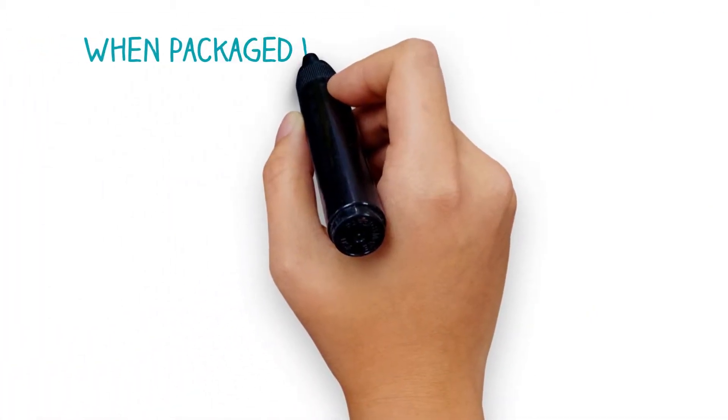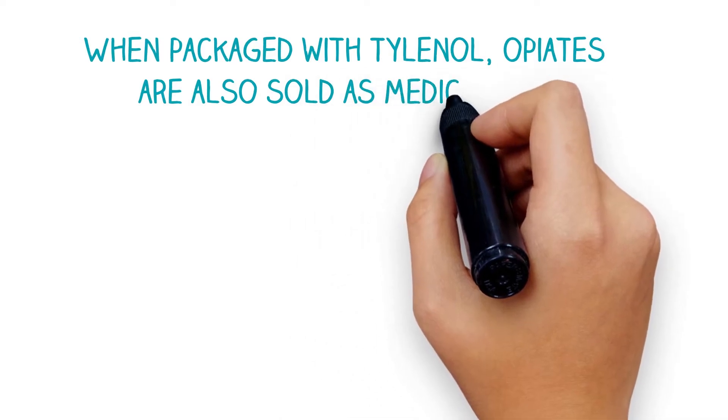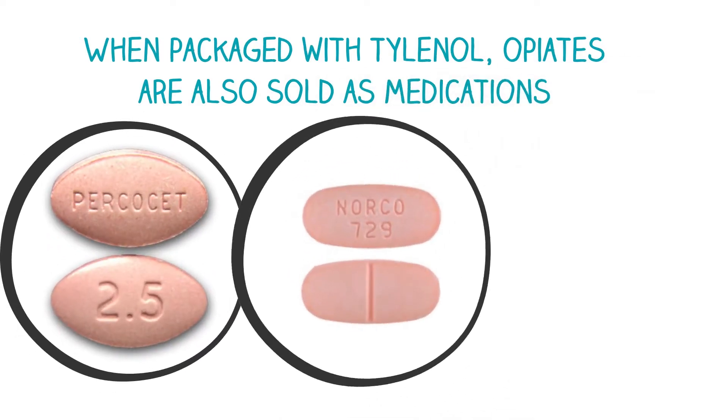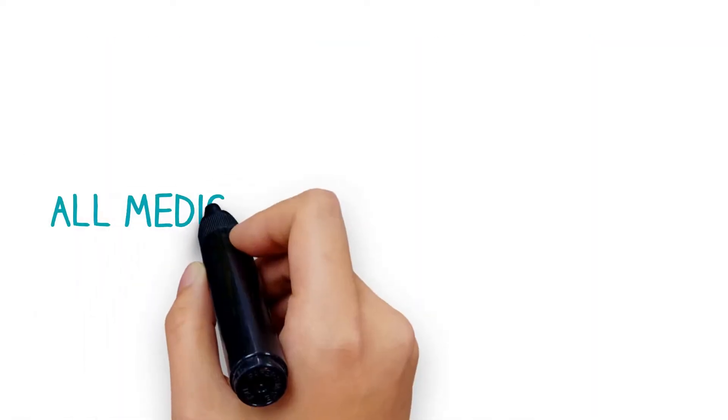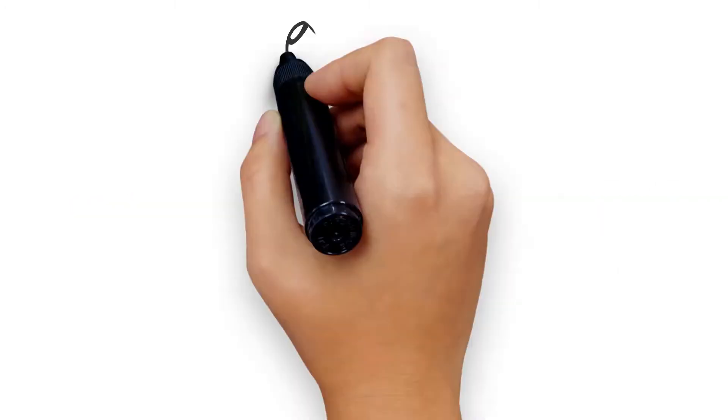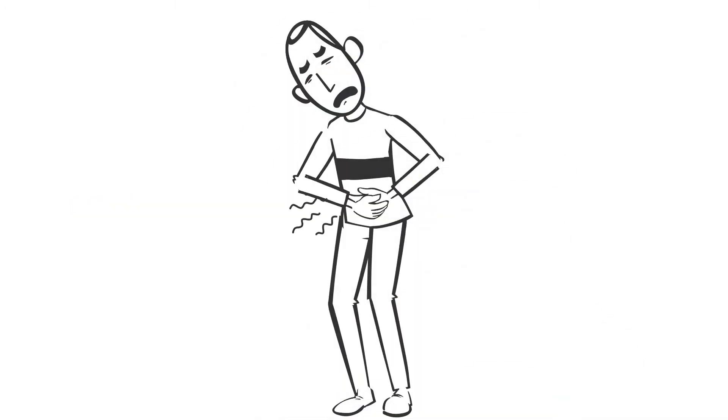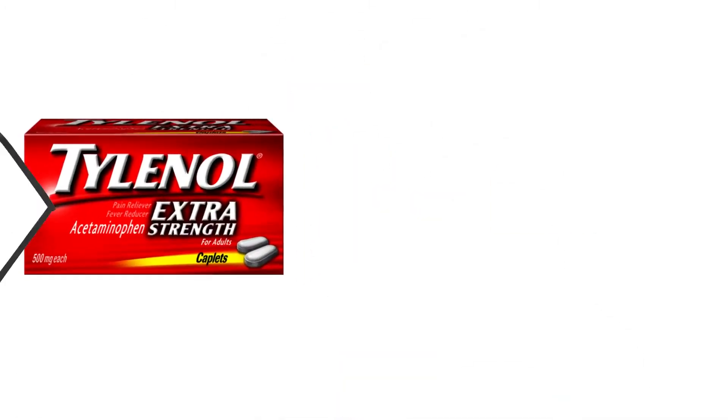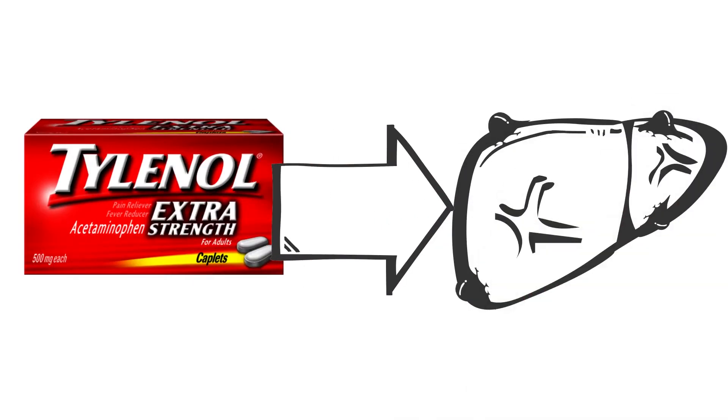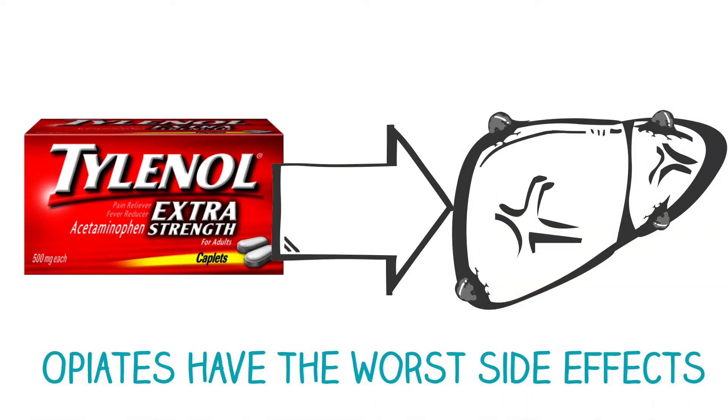When packaged with Tylenol, opiates are also sold as medications like Percocet, Norco, and Vicodin. All medications have side effects. NSAIDs can cause stomach irritation. Tylenol is hard on the liver in high doses. But the opiates have the worst side effects.